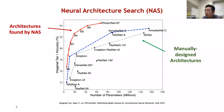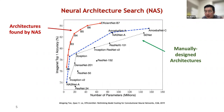Neural architecture search, or NAS, is a very important technique of AutoML where the goal is to automatically design high-quality neural network architectures. In the past few years, architectures found by NAS have been able to achieve superior performance compared to manually designed ones.